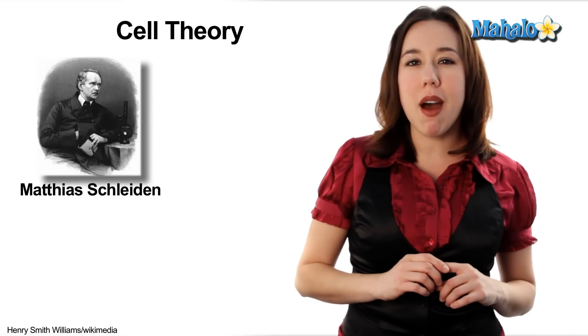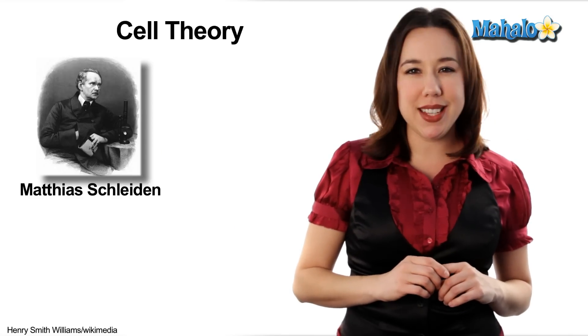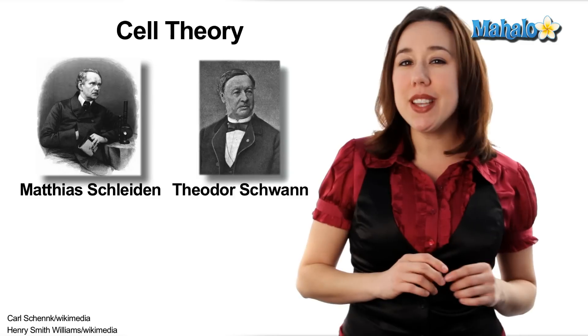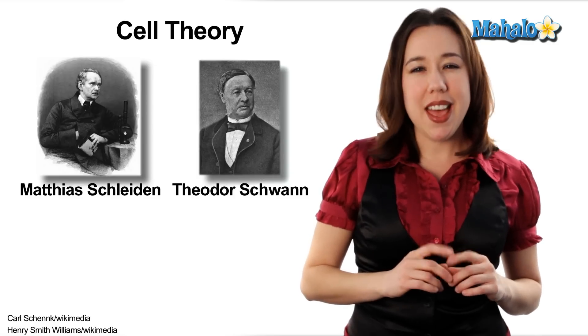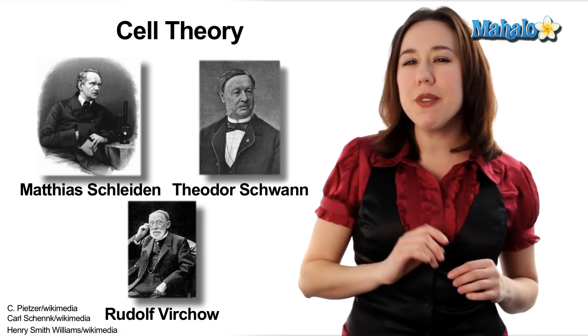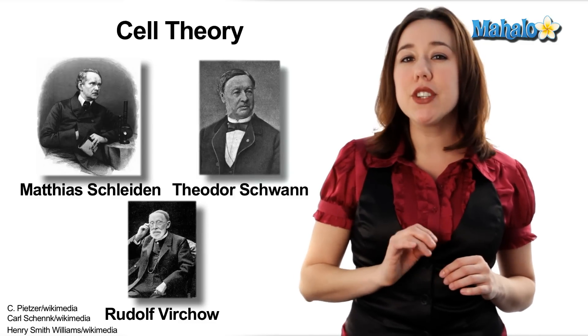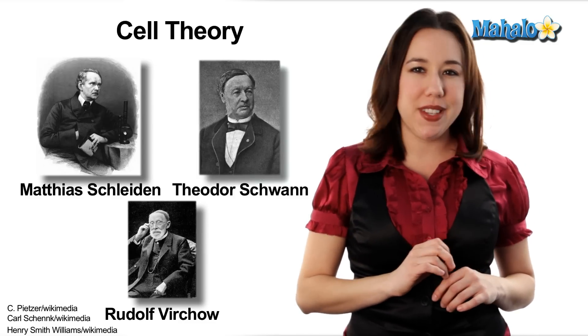Over the next 175 years, research would lead to the cell theory, first proposed by German botanist Matthias Schleiden and physiologist Theodor Schwann, and then fully refined by Virchow in 1858.